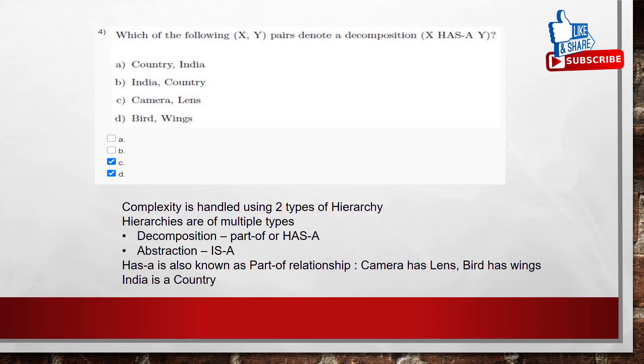As we know that, complexity can be handled by using two types of hierarchies. There are many types of hierarchies. And we are going to study about decomposition hierarchy and abstraction hierarchy. Decomposition hierarchy is also known as part of hierarchy or has-a type of hierarchy. Abstraction hierarchy is also known as is-a type of hierarchy. Has-a is also known as part of relationship. Here, if you see that, camera has lens, birds has wings.